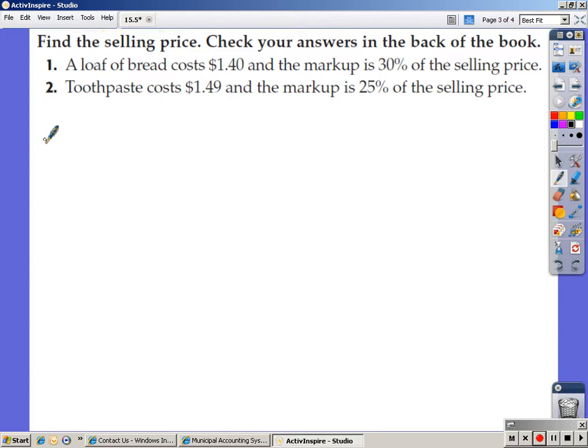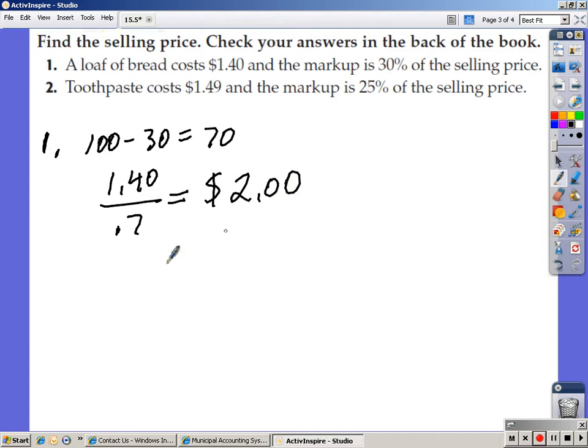Let's go ahead and work these. Number one. It says a loaf of bread costs $1.40 and the markup is 30% of the selling price. 100 minus 30 is 70. My cost is $1.40 divided by .7. Plug that into your calculator. $1.40 divided by .7 is two bucks.